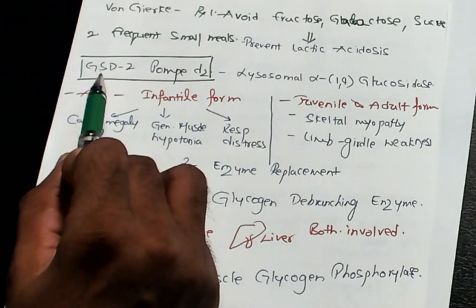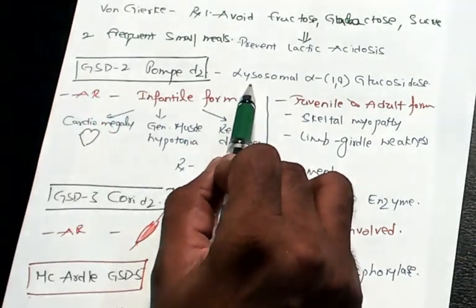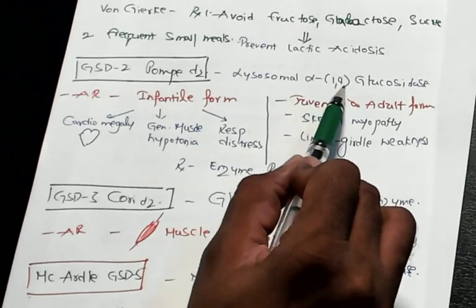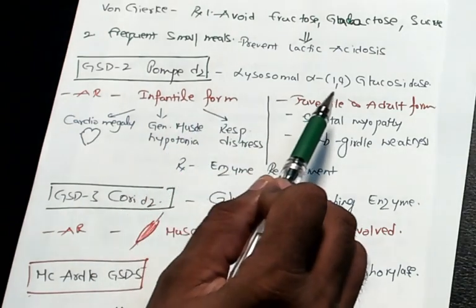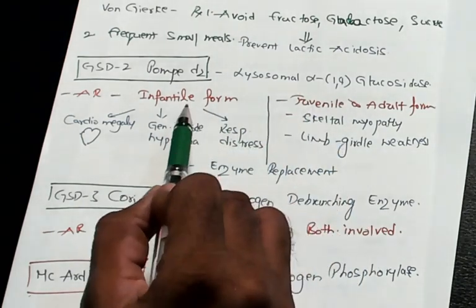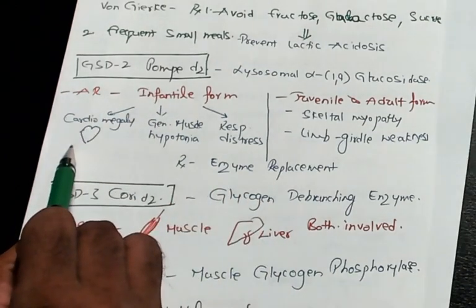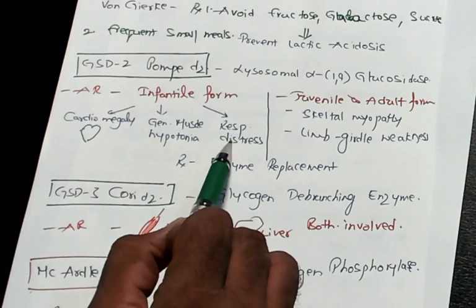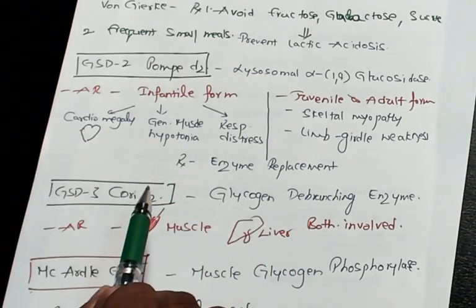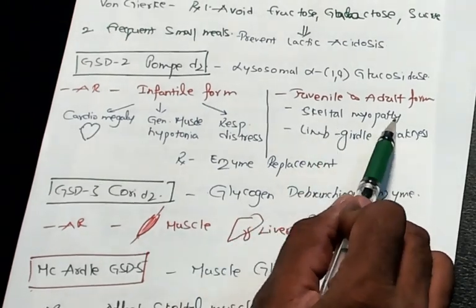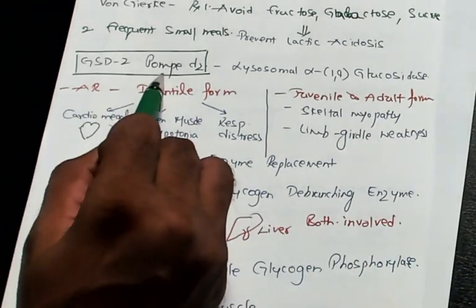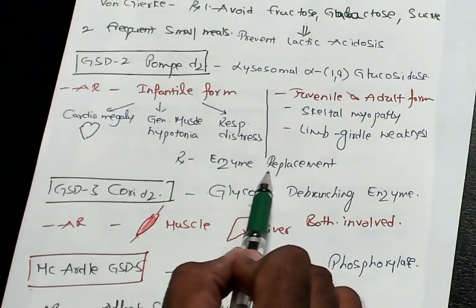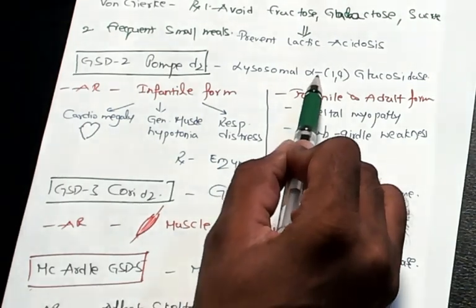Pompe disease is glycogen storage disorder 2. What is deficient? Lysosomal alpha-1,4-glucosidase is basically deficient. Pompe is also autosomal recessive and has two forms. Infantile form: cardiomegaly, generalized muscle hypotonia, respiratory distress. Juvenile and adult form: skeletal myopathy and limb girdle weakness. How do you treat Pompe? The good news is there is an enzyme replacement therapy with alpha-1,4-glucosidase.